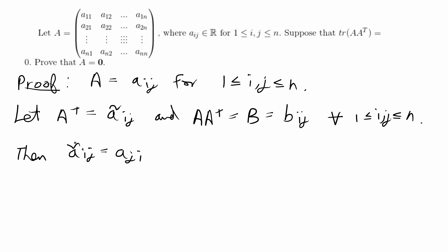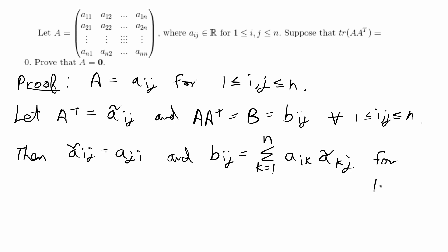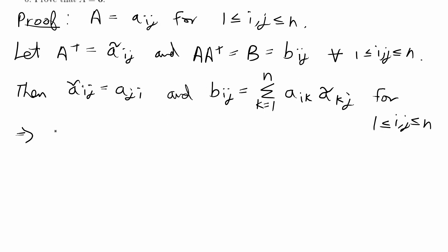So you switch the indices j and i for the transpose of A. This means the second index of the transpose of A equals the first index of A. Therefore we can write B_ij as the sum from k=1 to n of A_ik times A^T_kj, and using that equality we can rewrite B_ij as the sum from k=1 to n of A_ik times A_jk, for any i, j between 1 and n.